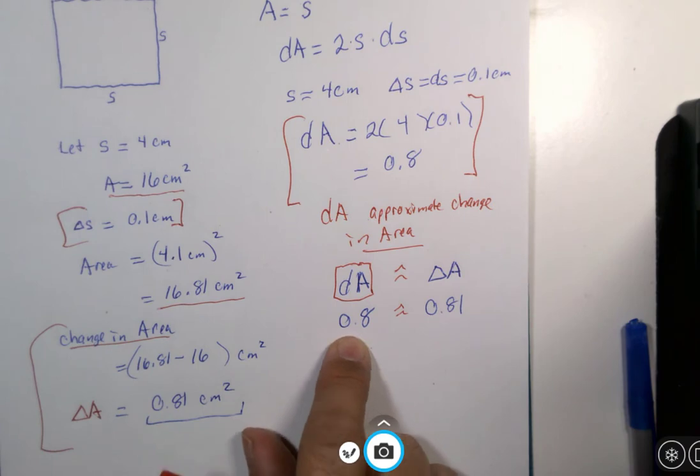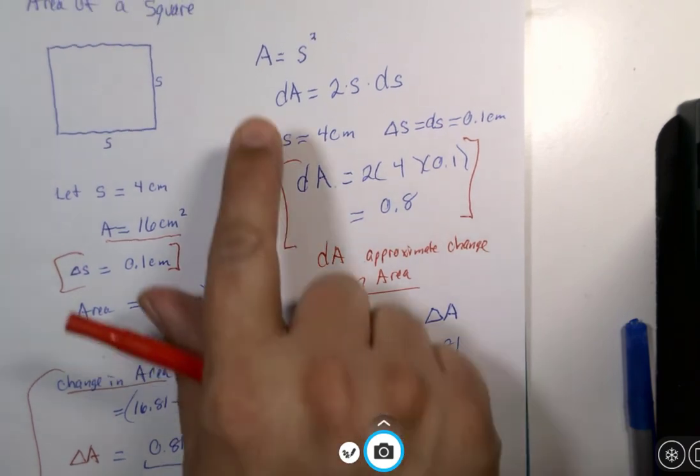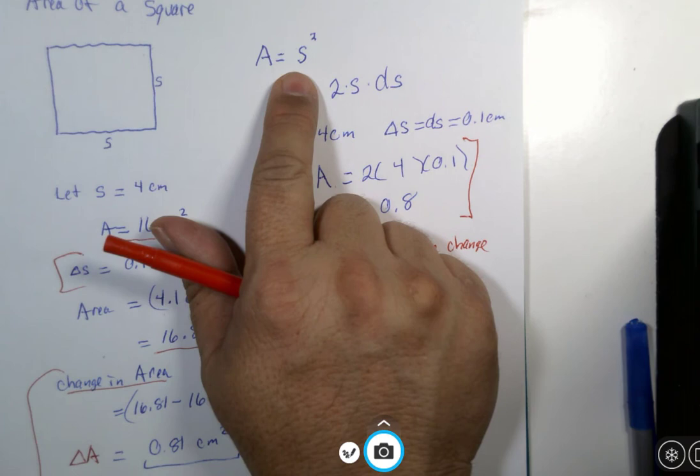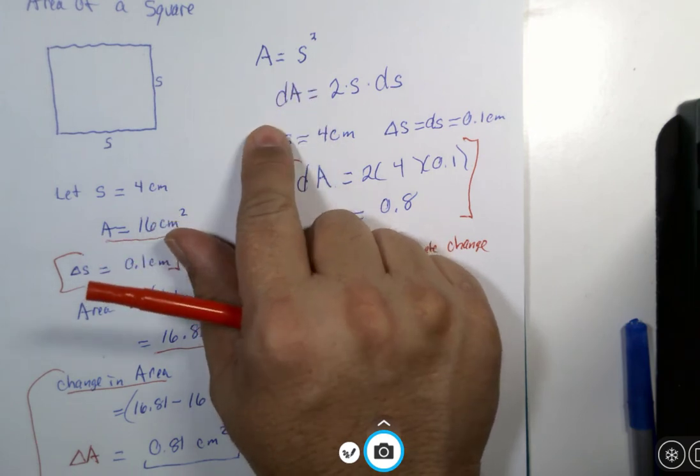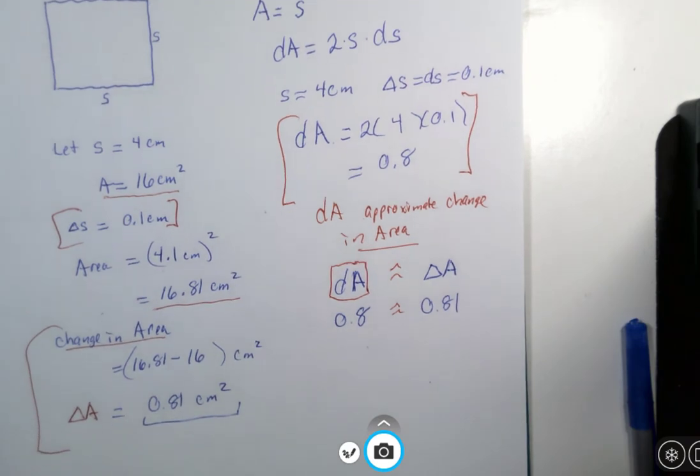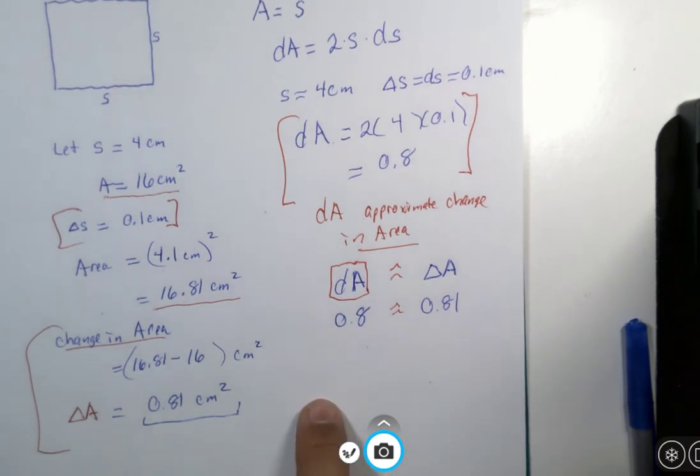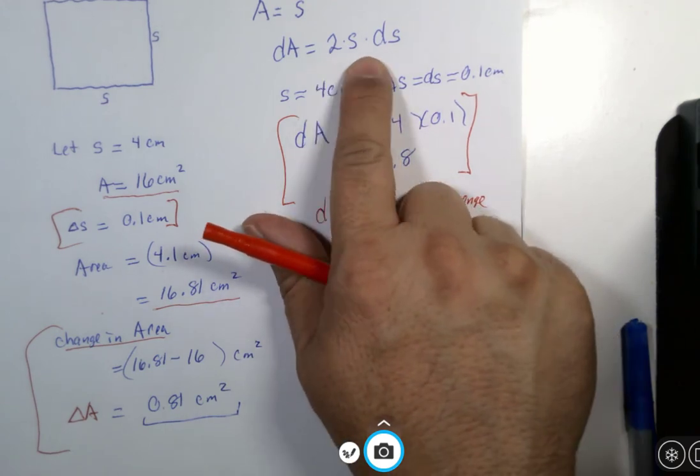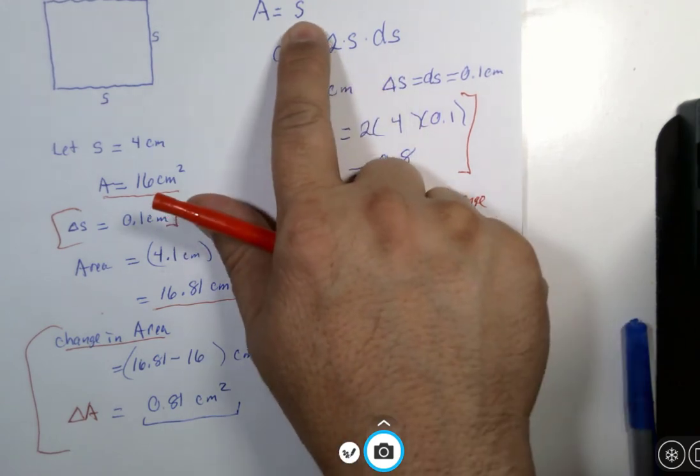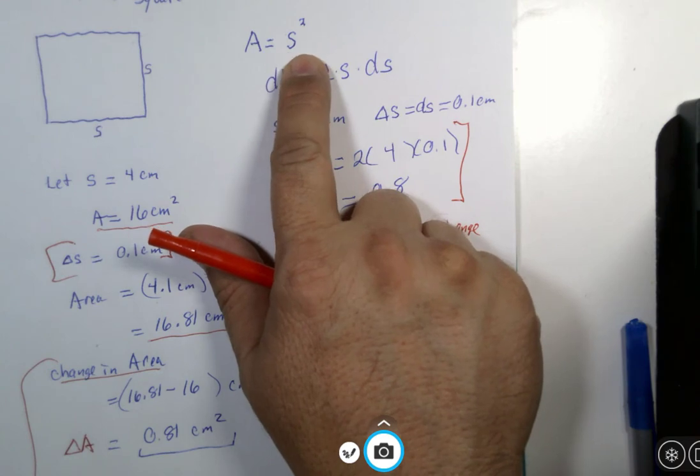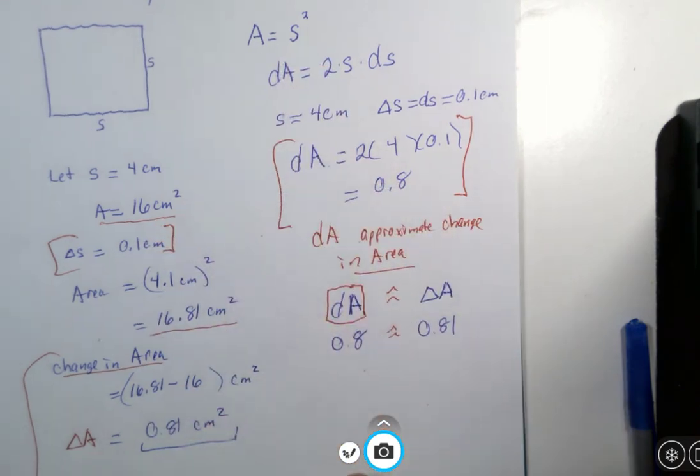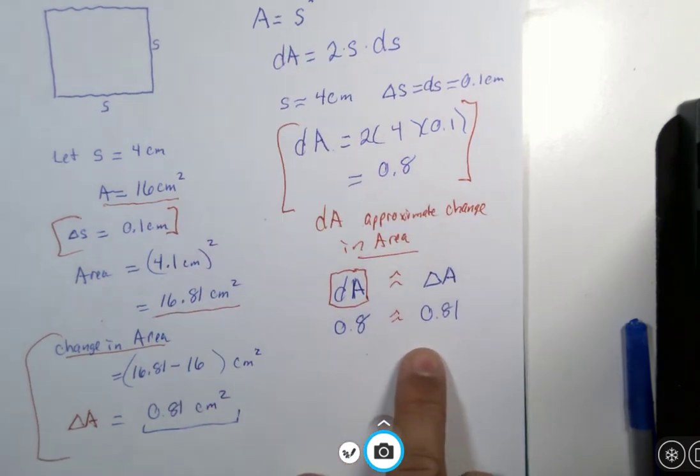Furthermore, sometimes we don't actually know the apparent function that we're working with, but we know all of the rates of change. We know the derivatives, and we know the error measurements of our tools. So sometimes we only know this information and we don't know the function from which it comes.